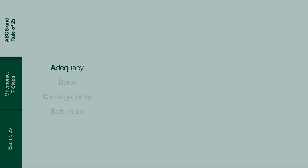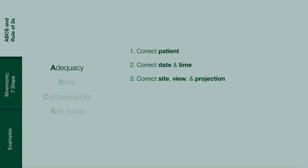Adequacy. Assess the adequacy of your x-ray by ensuring that it is for the correct patient, has the correct date and time, correct site, view and projection, as well as ensuring that the rule of twos has been applied. The rule of twos refers to having two views and two opinions. This also includes two joints, two limbs and two occasions when applicable.